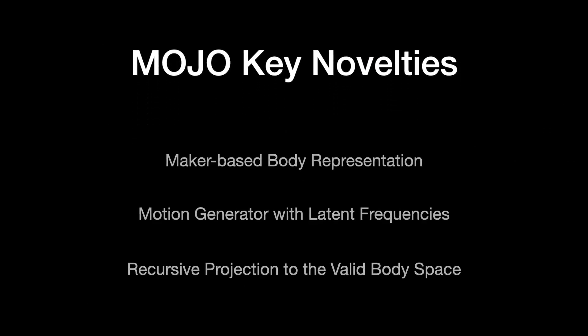The key novelties of MOJO are threefold. Namely, a marker-based representation of the body in motion, a motion generator with latent frequencies, and a recursive projection scheme to regularize the 3D body shape and pose.